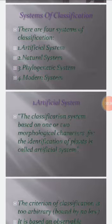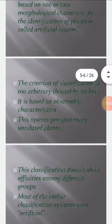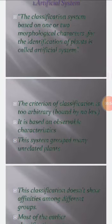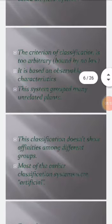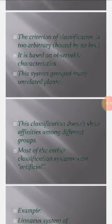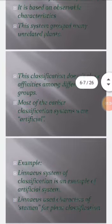Number one: artificial system. The classification system based on one or two morphological characters for the identification of plants is called artificial system. The artificial system's classification criteria is too arbitrary, that is, bounded by no law. It is based on observable characteristics. The system grouped many unrelated plants, and the classification doesn't show affinities or relationships among different groups. Most of the earlier classification systems were artificial.